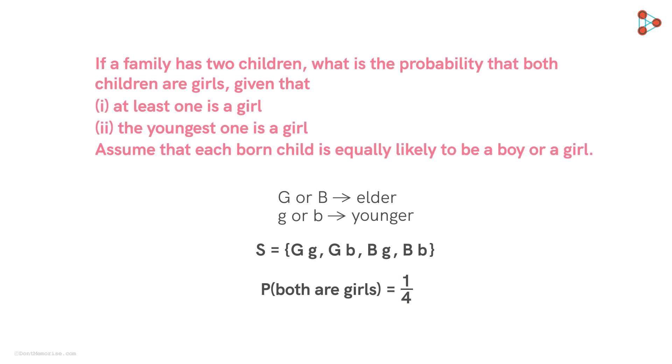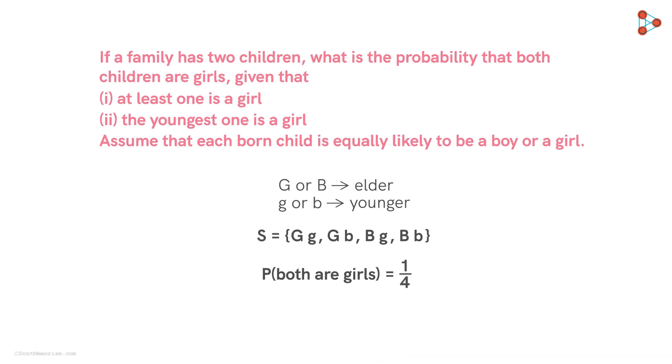What we are asked is the conditional probability that both children are girls given the condition that at least one is a girl. Which means if we know that at least one of the children is a girl based on this known condition, what is the probability that both children will be girls? Now let E be the event that both the children are girls and F be the event that at least one is a girl.